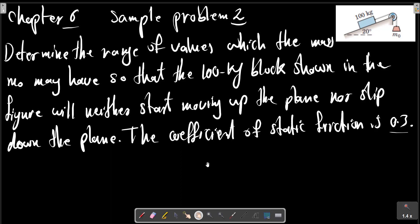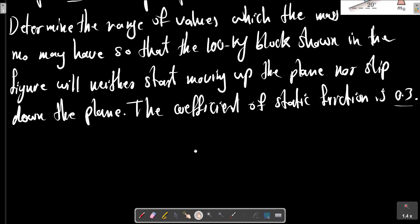Sample problem 2: Determine the range of values which the mass m0 may have so that the 100 kilogram block shown in the figure will neither start moving up the plane nor slip down the plane. The coefficient of static friction is 0.3. Consider this picture.